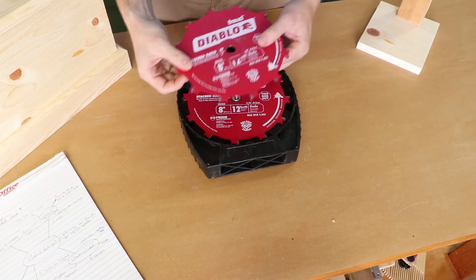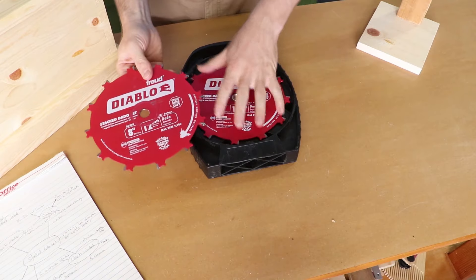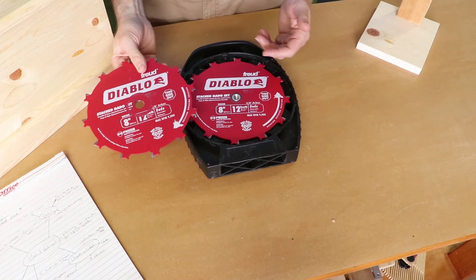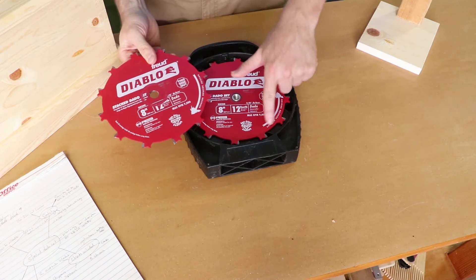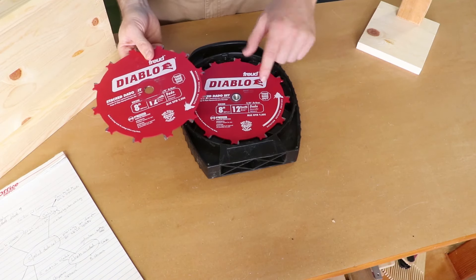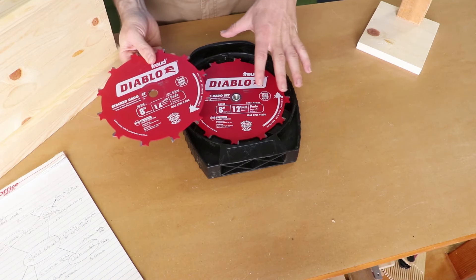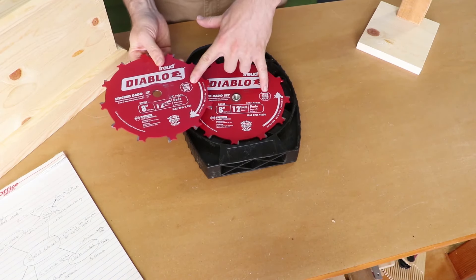You get two blades. These blades are the outside blades. They're red and they have opposite rotational patterns. And it's important to put them on with the correct rotation as well as the label that says this side out.